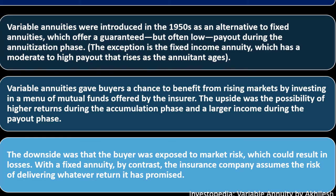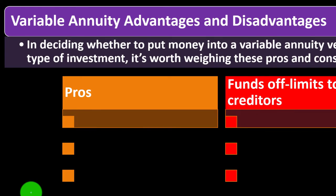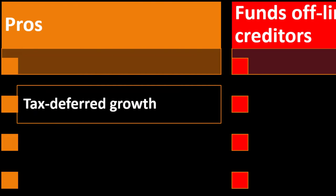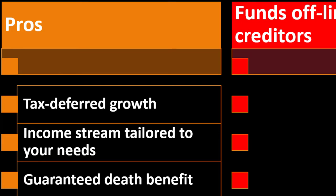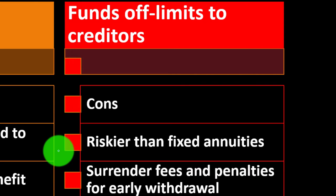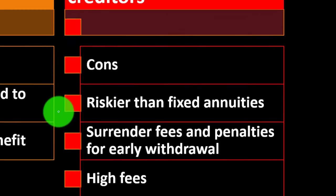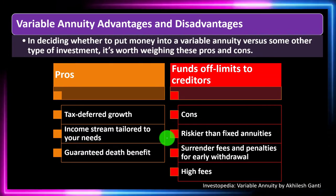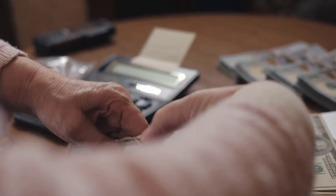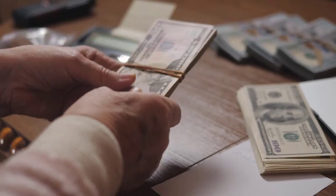With a fixed annuity, by contrast, the insurance company assumes the risk of delivering whatever return it has promised. When deciding whether to put money into a variable annuity versus another type of investment, it's worth weighing the pros and cons. On the pros side: tax-deferred growth, an income stream tailored to your needs, a guaranteed death benefit, and funds that are off-limits to creditors. On the cons side: riskier than fixed annuities, surrender fees and early withdrawal penalties, and potentially high fees — especially compared to simply putting money into a stock market index fund.